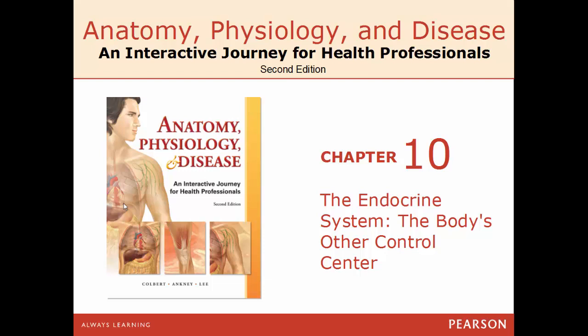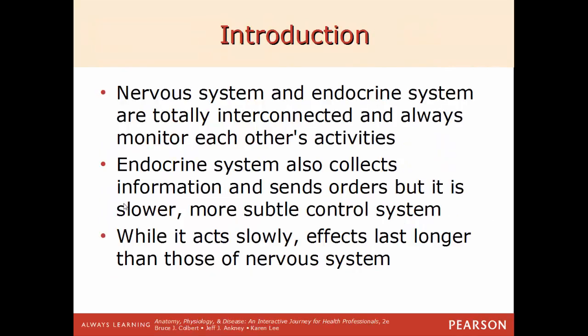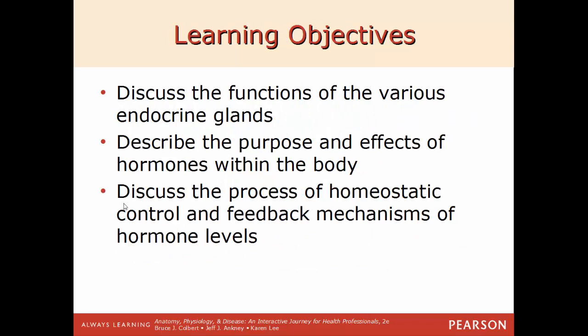Welcome back. In this video we will cover chapter 10 in our anatomy course: the endocrine system, the body's other control center. The nervous system and the endocrine system are totally interconnected and are always monitoring each other's activities. The endocrine system controls a good bit of what your body does on a day-to-day basis. It collects information like the nervous system does, but sends information at a much slower rate and often has a more subtle control system. Even though it acts more slowly, the effects will last longer — sometimes hours or even days long.